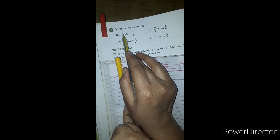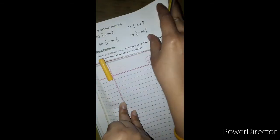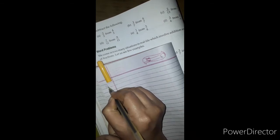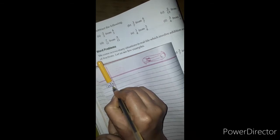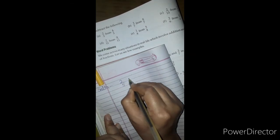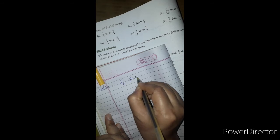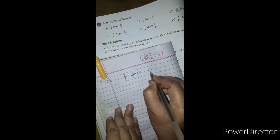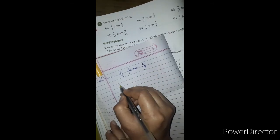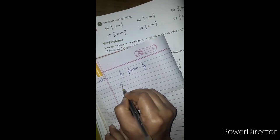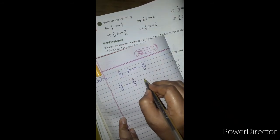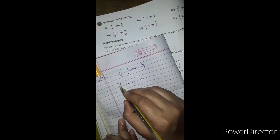...minus 2 upon 5. So solution number 3A is: 2 upon 5 from 4 upon 5. We will write the question as 4 upon 5 minus 2 upon 5, and our answer will be: 4 minus 2 equals 2, and denominator is common.